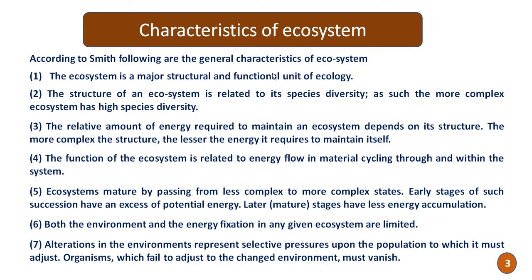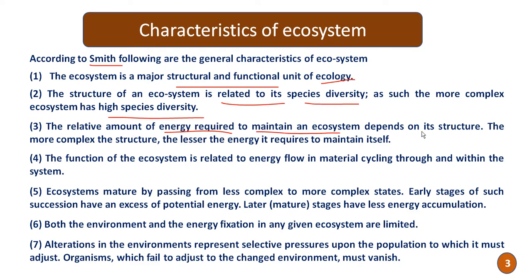The characteristics of the ecosystem according to Smith: the first one is that the ecosystem is a major structural and functional unit of ecology. The structure of an ecosystem is related to its species diversity — a more complex ecosystem has higher species diversity. Third, the relative amount of energy required to maintain an ecosystem depends on its structure. The more complex the structure, the lesser energy it requires to maintain itself. This is an inverse relationship.